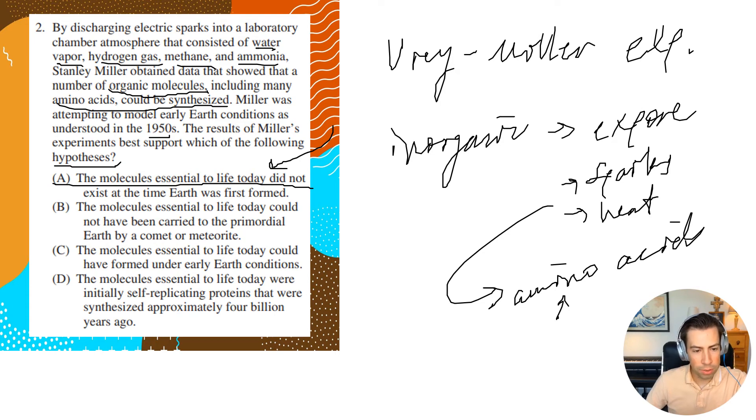And then answer choice B says that the molecules essential to life today could not have been carried to the primordial earth by a comet or meteorite. Okay, so I mean, maybe they could have, right? I mean, that's one interpretation. So that's not correct.